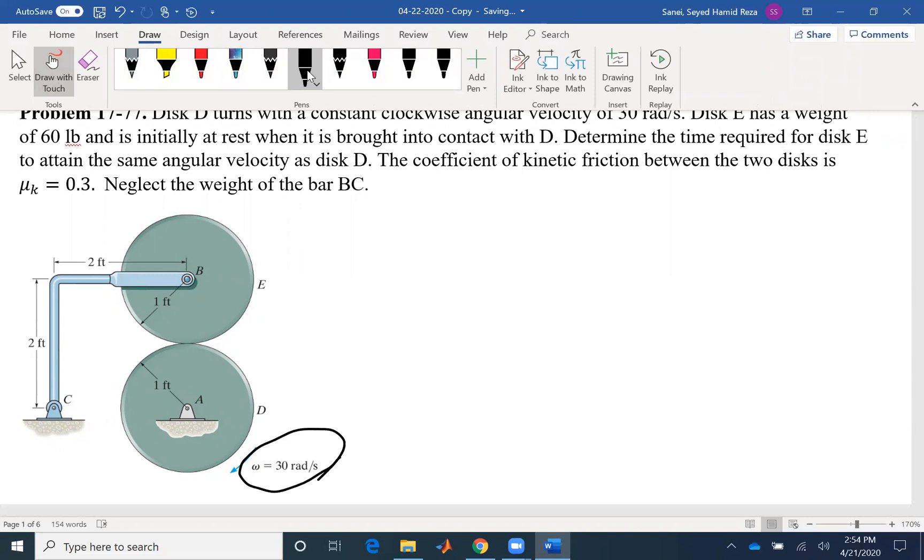Whenever we talk about the time that it takes, we need a kinematic equation. We need to find alpha, the angular acceleration, so we can find the time that it takes for disk E to reach 30 radians per second.